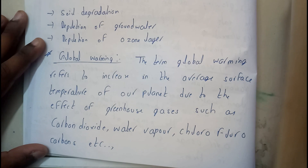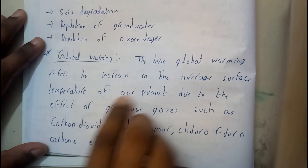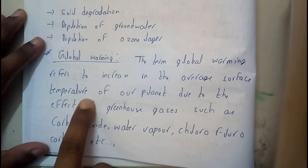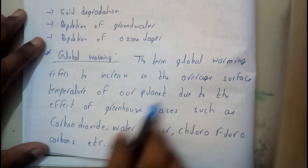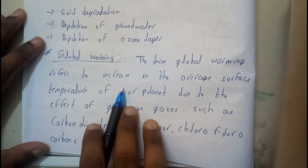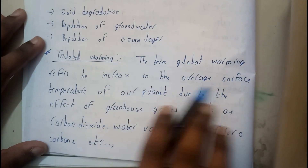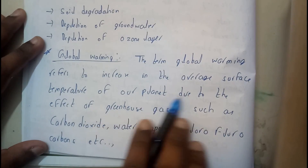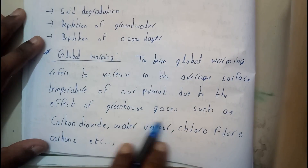Hello guys, in this tutorial let's see all about global warming. The term global warming refers to the increase in the average surface temperature of our planet due to the effect of greenhouse gases.